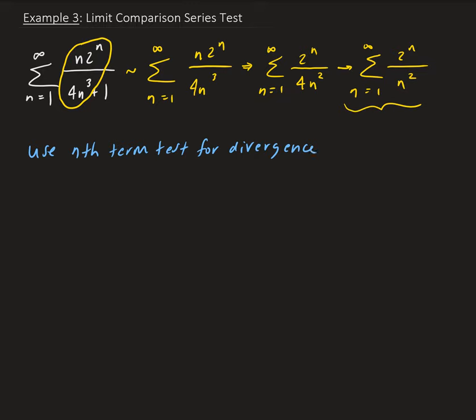So we're going to use this. So recall, just to recall what this is. So remember, if we have the limit, if the limit of the nth term is not equal to 0, this implies that the corresponding series, and let's assume it's starting from 1, is diverging.